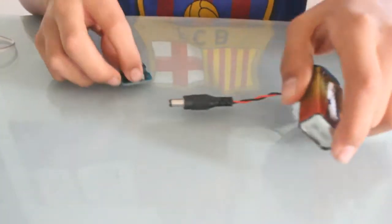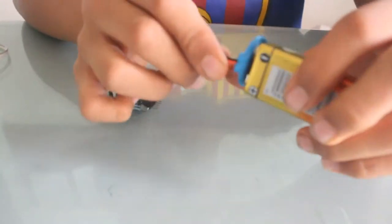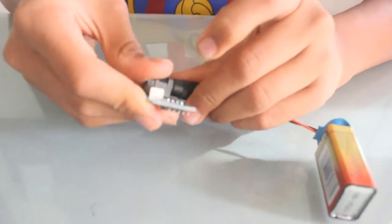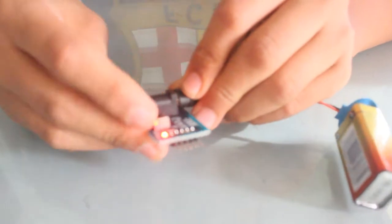First, take the battery and battery clip and the power. As you can see, it is already connected to the battery. Now just attach this to the power and slide the switch to see if it's okay. It is, as the light is lighting up.